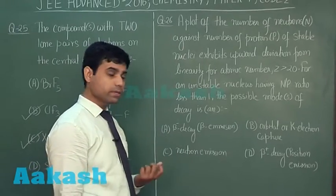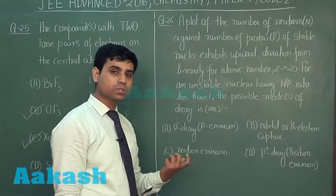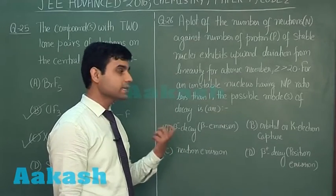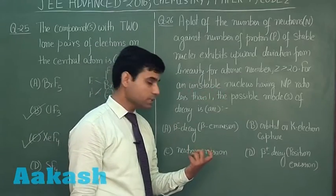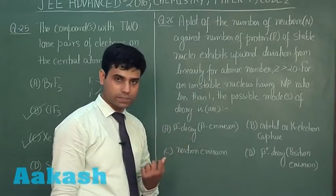Always remember, when we have N by P ratio less than 1, then the nucleus gains stability by either K electron capture or by positron emission.